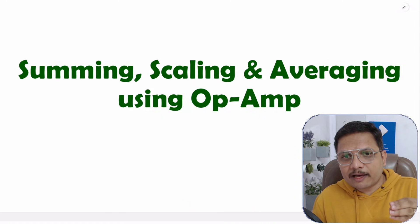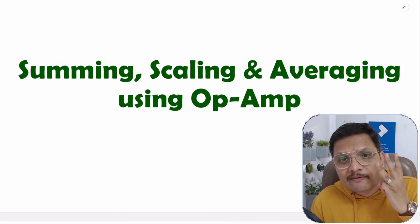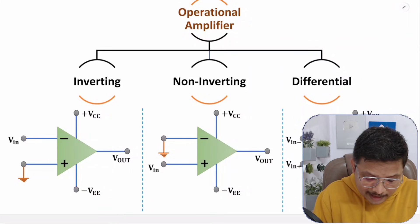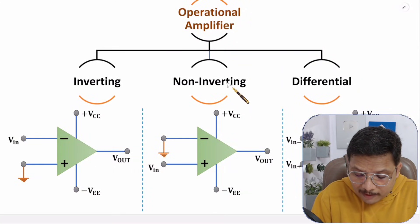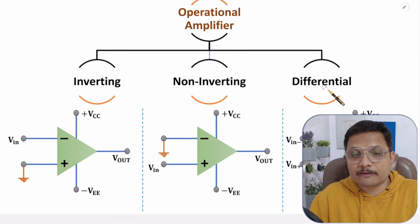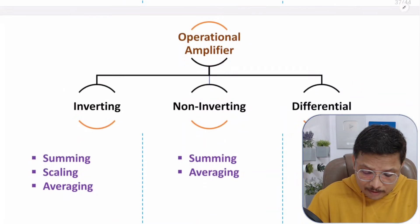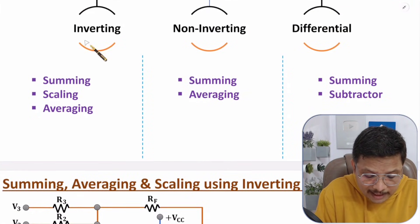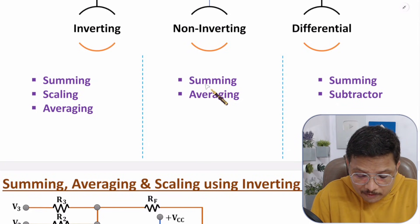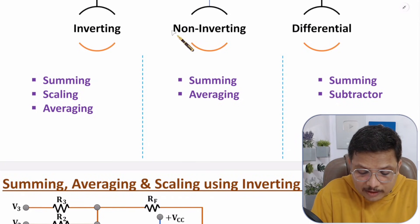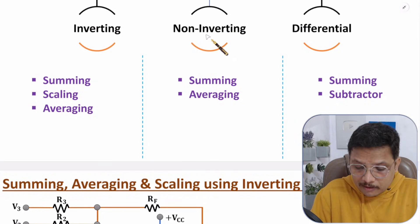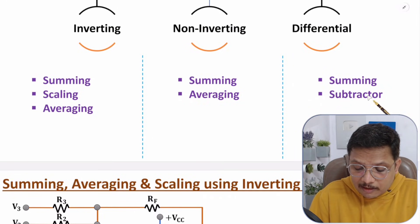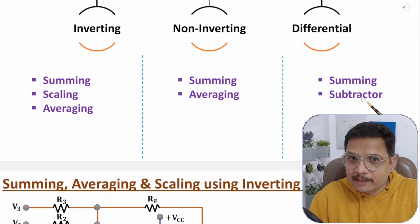An operational amplifier can be used in three different configurations: inverting, non-inverting, and differential. In this video, I'll explain summing, scaling and averaging using inverting configuration, as well as summing and averaging using non-inverting configuration. Using differential configuration we can perform summing and subtraction, but that is not covered in this video.